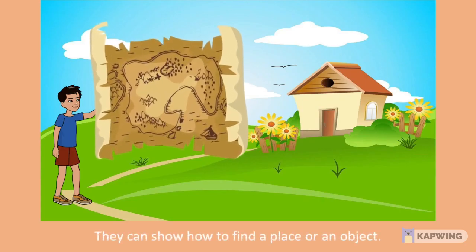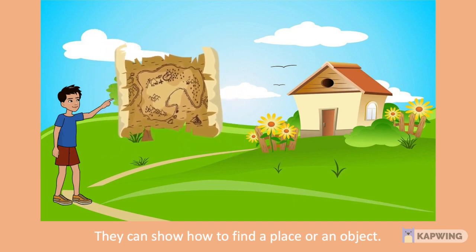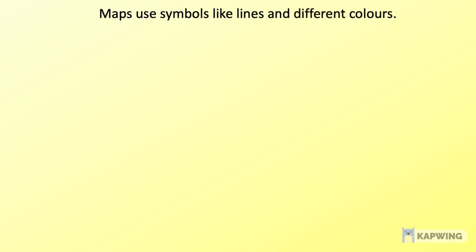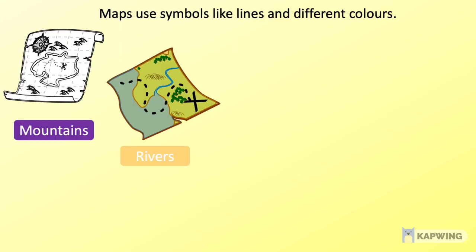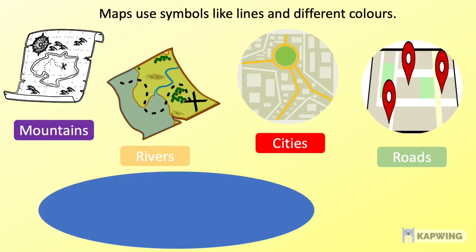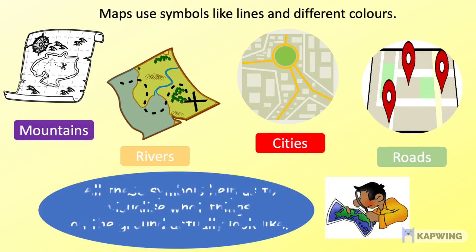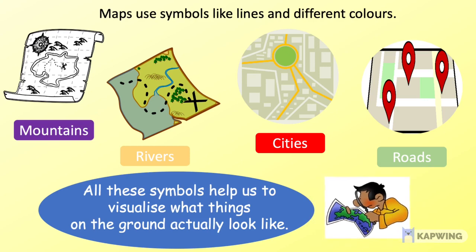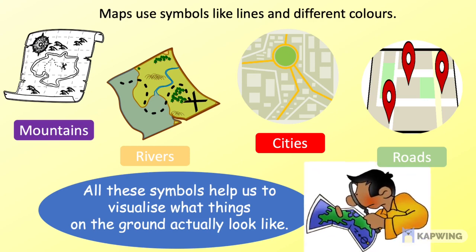They can show how to find a place or an object. Maps use some special symbols and different colors to show features such as mountains, rivers, cities, roads. All these symbols help us to visualize what things on the ground actually look like.